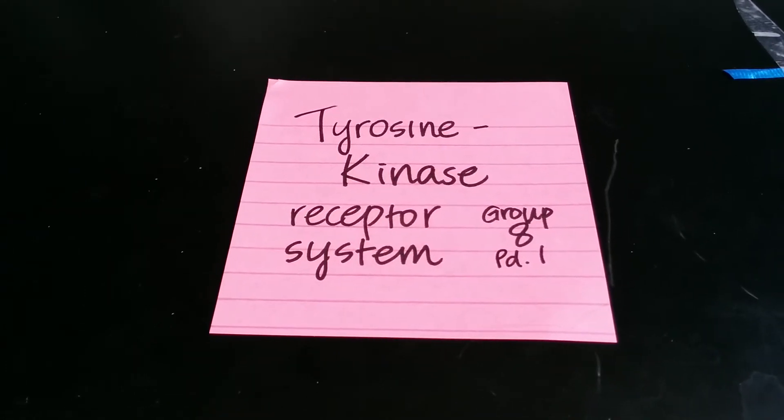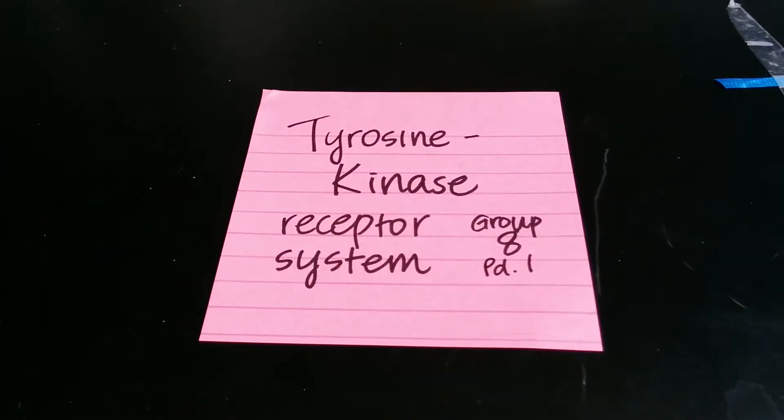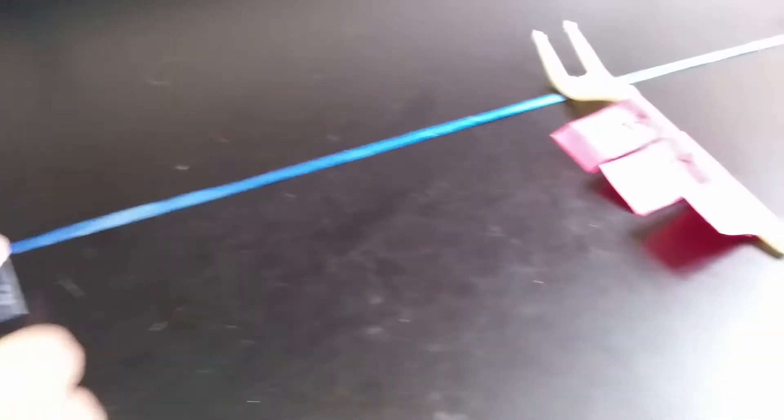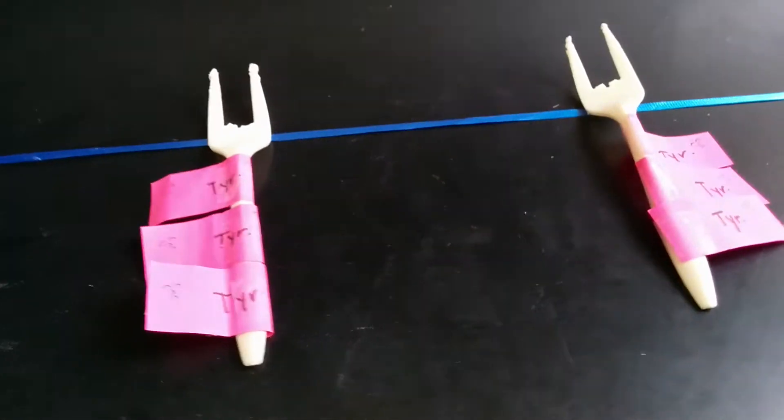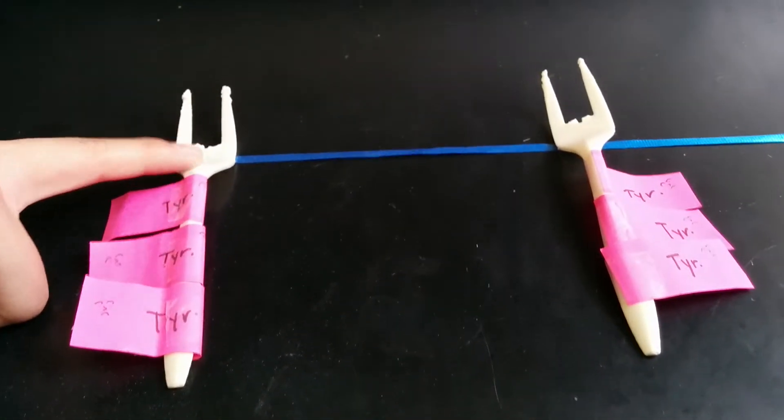Welcome to the exciting world of the tyrosine kinase receptor system by group 8 of period 1. The blue line here represents the plasma membrane. Nearing the edge of the plasma membrane are two tyrosine kinase receptors.